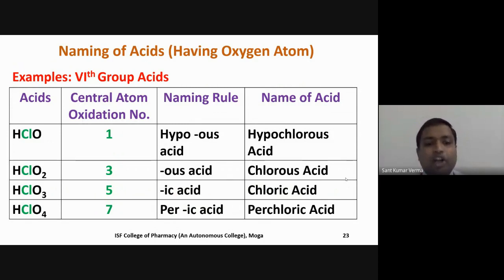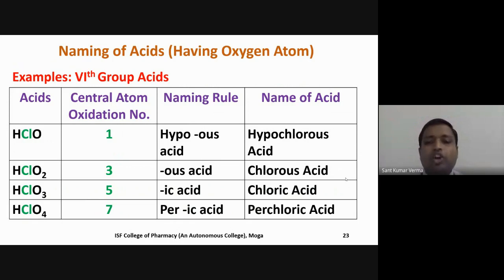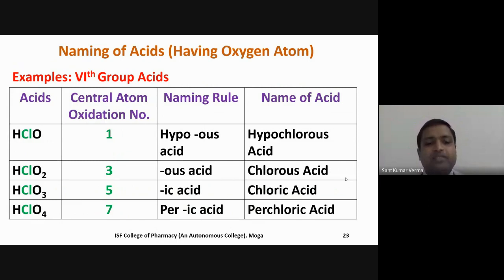To summarize Group 17 acid naming: HClO is hypochlorous acid (+1), HClO₂ is chlorous acid (+3), HClO₃ is chloric acid (+5), and HClO₄ is perchloric acid (+7). All four oxidation states are present, so all four prefixes apply — from hypo-ous to per-ic.